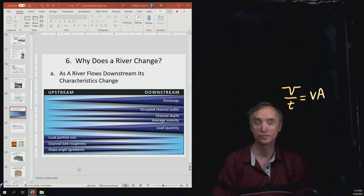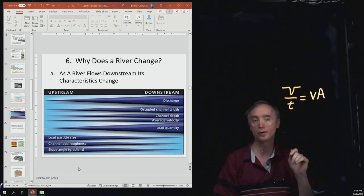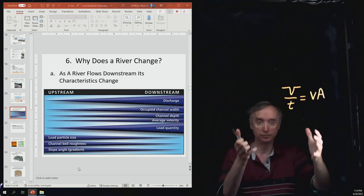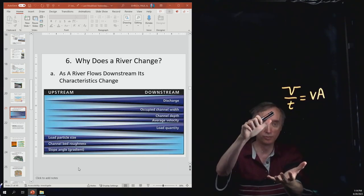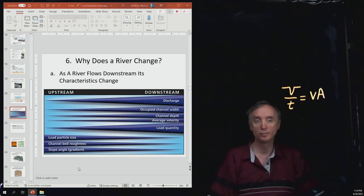And then the load, so the amount of material being carried by the river is going to increase. So the last three things, though, are decreasing. As you go downstream, you find that the particle size, so when it's in the mountains, it can carry boulders. It can move boulders when it's in the mountains. But by the time you're in the Mississippi River, it's moving clay-sized particles.